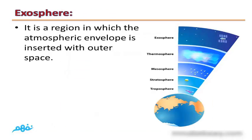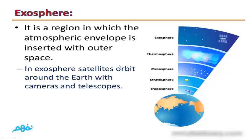The Exosphere is the final layer, where the atmospheric envelope merges with outer space. In the Exosphere, satellites orbit around the Earth with cameras and telescopes. So the layer that contains satellites is called the Exosphere.